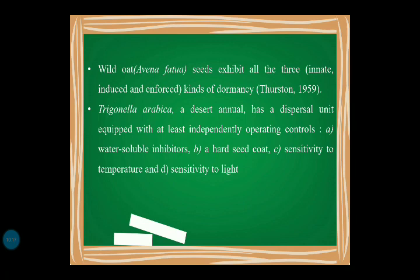This combination of dormancies in Indian rice grass was also reported by Thurston in 1959. Another example is Trigonella arabica, a desert annual. Its dispersal unit is equipped with at least independently operating controls including water-soluble inhibitors, a hard seed coat, and sensitivity to both temperature and light. This is all about seed dormancy and its types, including the combination of dormancies.